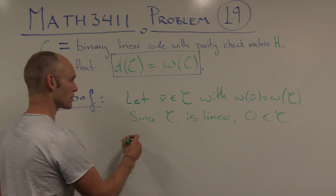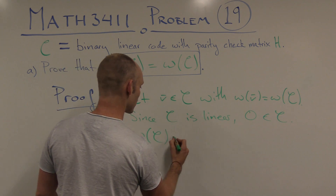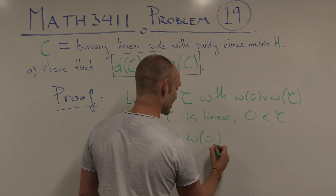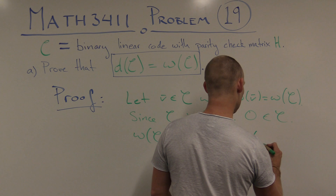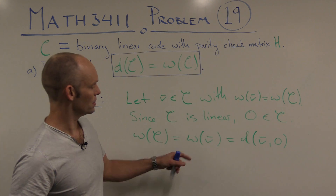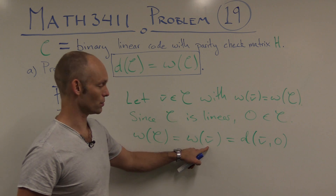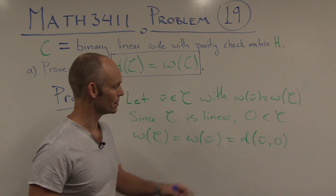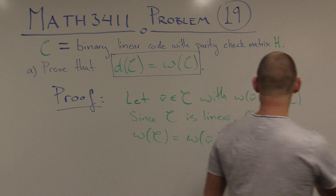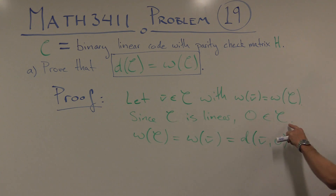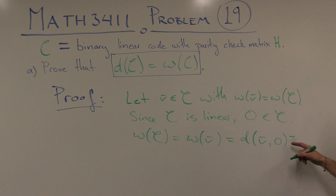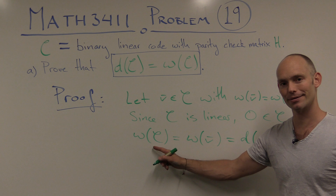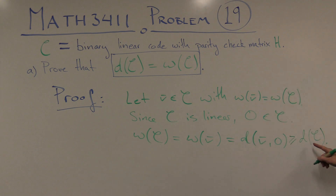Why do we need that? Well, the minimal weight of the code equals the weight of V. But the weight of V is also equal to the Hamming distance between V and 0, since it's just the number of coordinate entries of V that are not equal to 0. So since 0 and V are both codewords of C, the distance between them is at least the minimal distance between any two codewords of C. Therefore, the minimal weight of a codeword in C is greater than or equal to the minimal distance of the code.